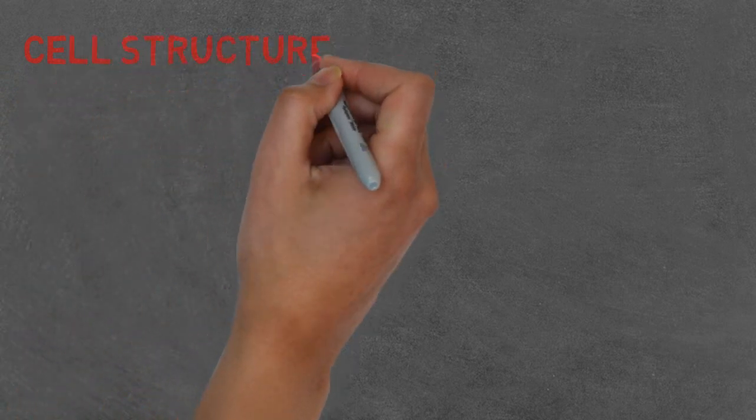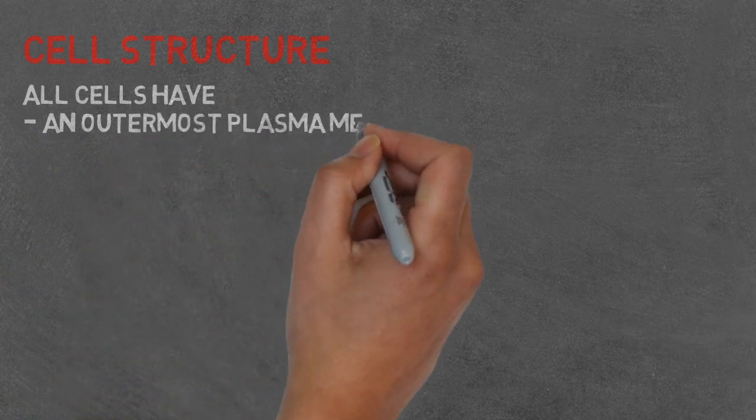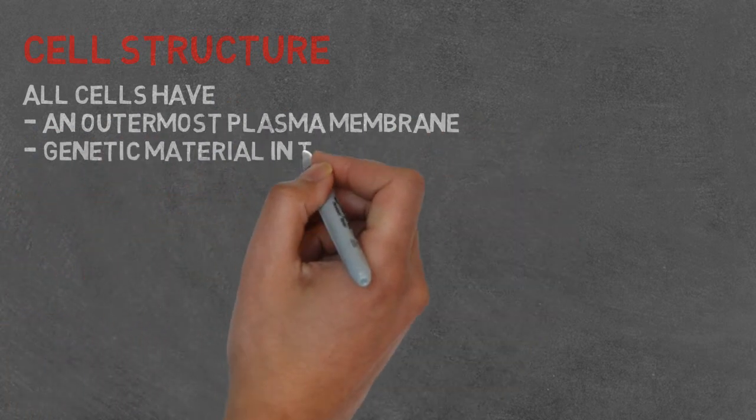Cell structure. All cells have an outermost plasma membrane, genetic material in the form of DNA, and a cytoplasm with ribosomes.